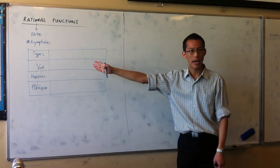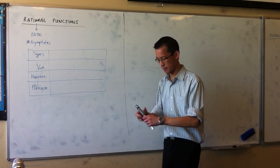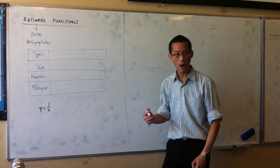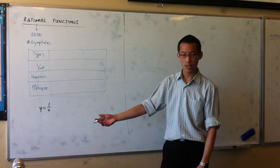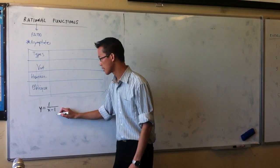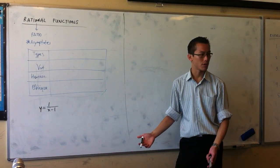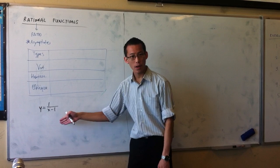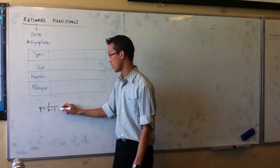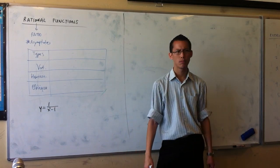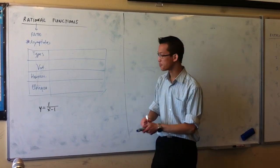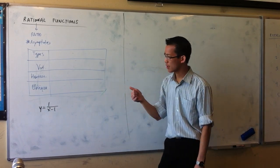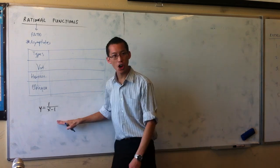How can you tell a vertical asymptote — what does a vertical asymptote come from? Let's think about some examples, things like y equals 1 over x. Where's the vertical asymptote? It's at x equals 0. Now if I just change this a little bit, what effect does that have on the vertical asymptote? It moves it over — now the vertical asymptote is x equals 1. How do I get the vertical asymptote? What if I made it something like x squared minus 1?